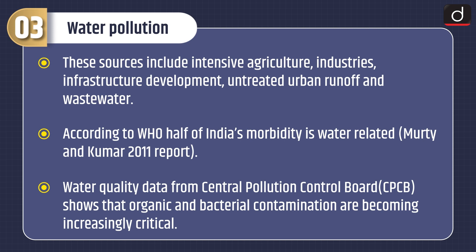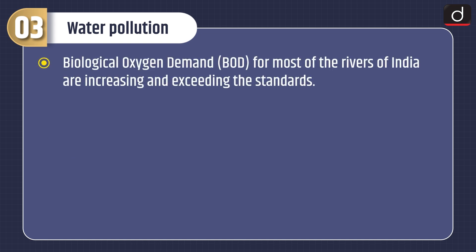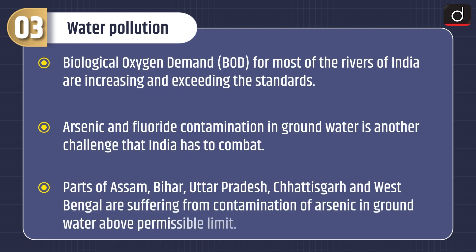According to WHO, half of India's morbidity is water related (Moorthy and Kumar, 2011 report). Water quality data from the Central Pollution Control Board (CPCB) shows that organic and bacterial contamination are becoming increasingly critical. Biological oxygen demand (BOD) for most rivers of India are increasing and exceeding the standards. Arsenic and fluoride contamination in groundwater is another challenge. Parts of Assam, Bihar, Uttar Pradesh, Chhattisgarh and West Bengal are suffering from arsenic contamination in groundwater above permissible limits.